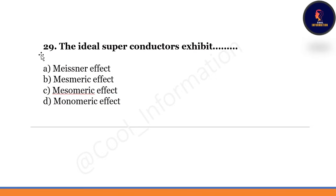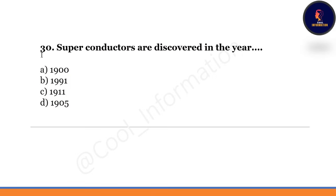The ideal superconductor exhibits — option A: Meissner effect. Option B: Meissner effect (repeated). Option C: mesomeric effect. Option D: monomeric effect. Correct option is A — the Meissner effect.